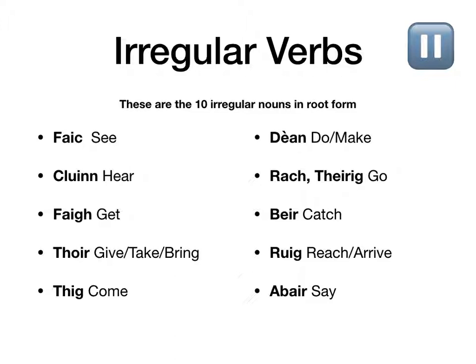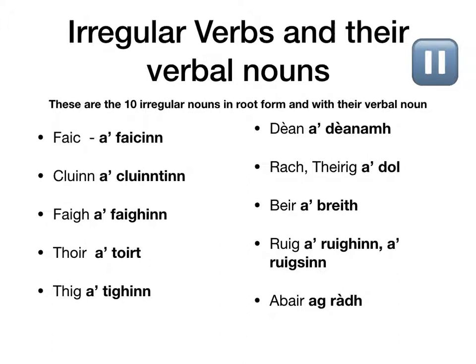Learn them, get them down, say them in your sleep. They also have their verbal nouns, and you'll notice some are already looking a little irregular: a faighinn, a cluinntinn, a faicinn, a toirt, a tighinn — say those first five again: a faighinn, a cluinntinn, a faicinn, a toirt, a tighinn. Then the next ones: a dèanamh, a dol, a breith, a ruighinn, a ràdh.